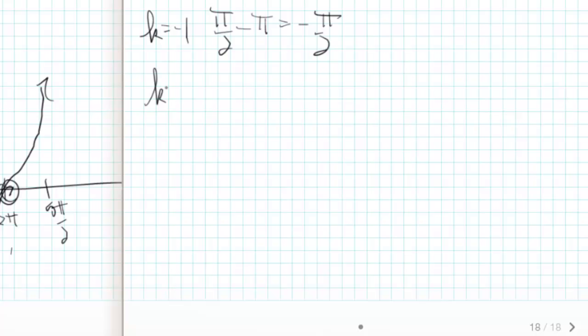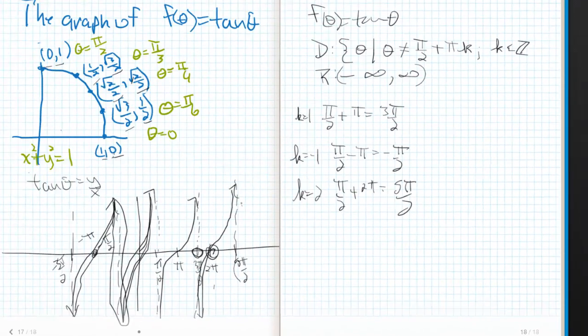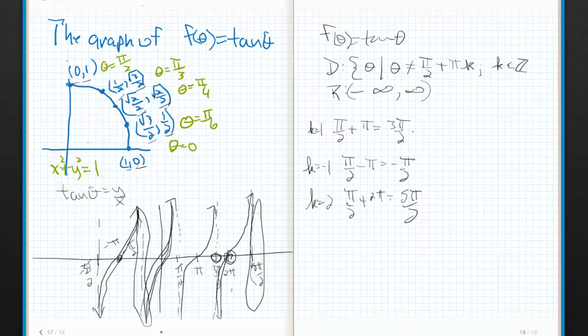If I let k equal 2, then pi halves plus 2 pi is equal to 5 pi halves. And that is that asymptote right there, which I'm not allowed to have.